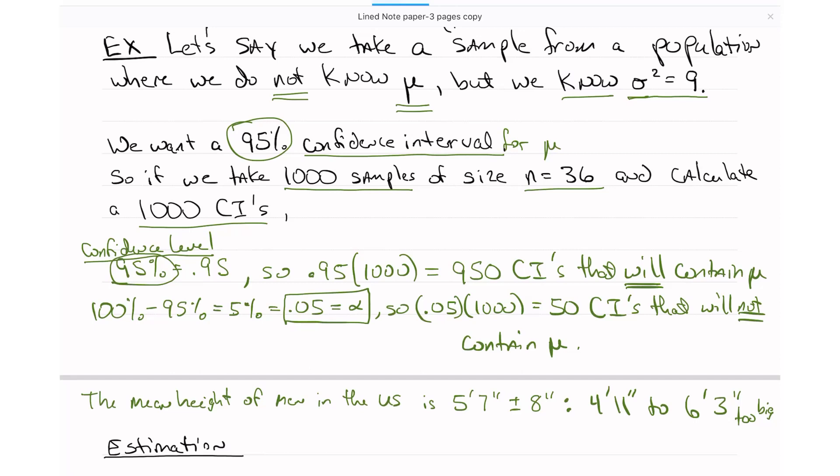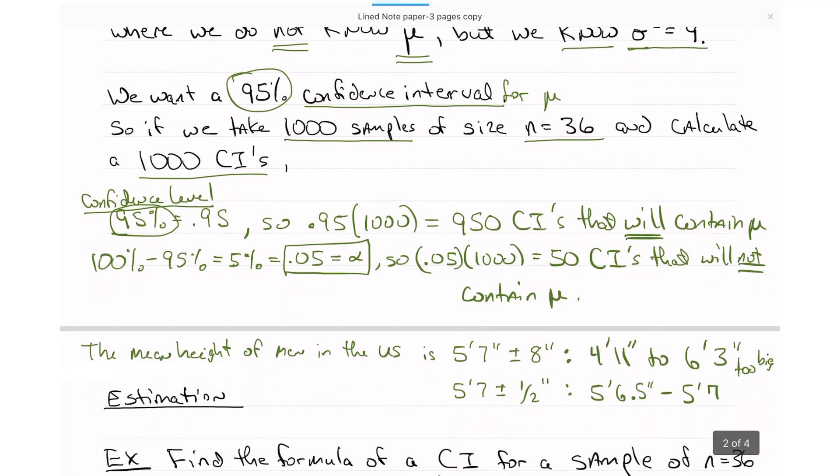But if I tell you that it's 5'7", plus or minus 1.5 inches, then that goes from 5'5.5" to 5'8.5". Well, that's only 3 inches total. That's pretty good. I feel a lot more like I know what the true mean height of men is in that case. So we don't want this interval to be too big.